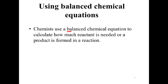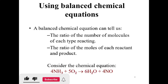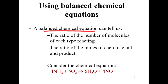Chemists use a balanced chemical equation to calculate how much of a reactant is needed or how much of a product is formed in a reaction. A balanced chemical equation can tell us the ratio of the number of molecules of each type reacting and the products.